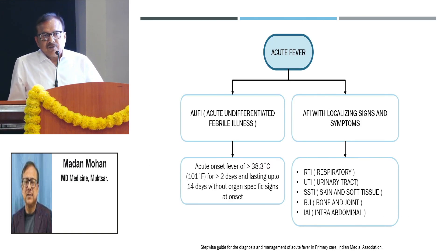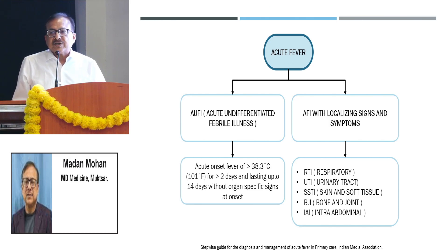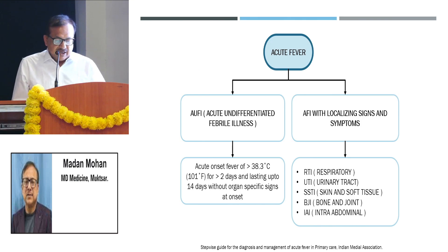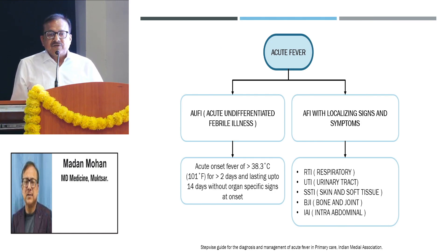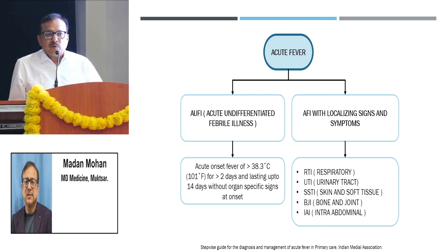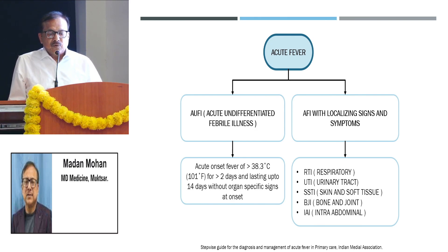If we talk of acute fever, we have two types of patients in our practice. One in which we have localizing signs and symptoms pertaining to a particular system like respiratory system, gastrointestinal tract, urinary tract, skin and soft tissue infection. The other category, most difficult to evaluate, is acute undifferentiated febrile illness, defined as any fever of more than 38.3 degrees centigrade lasting for more than two days and up to two weeks.